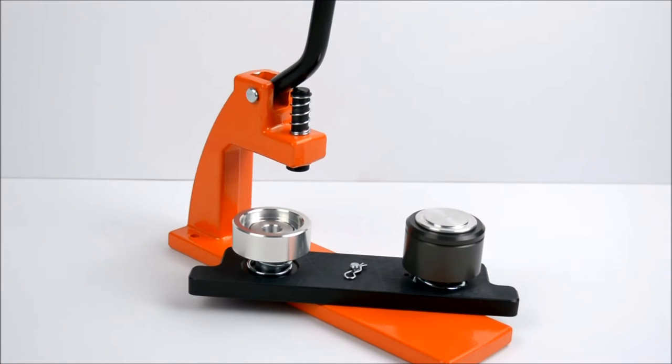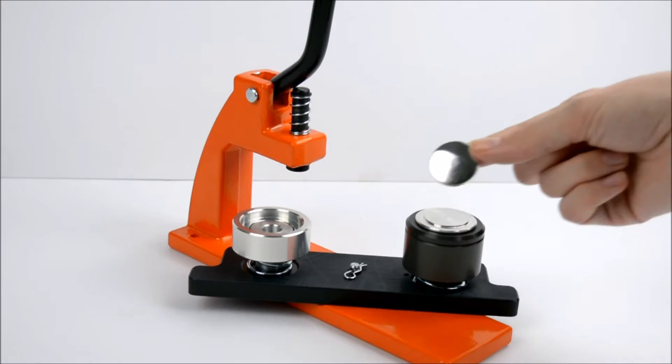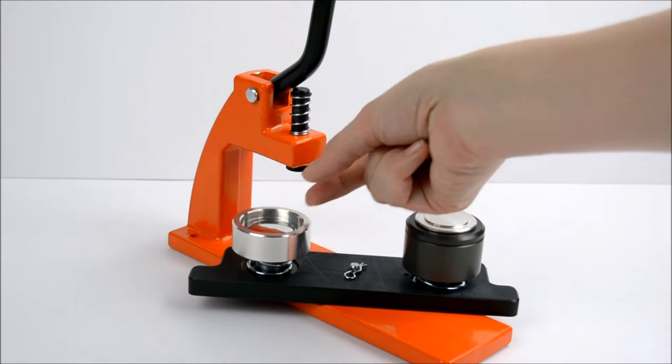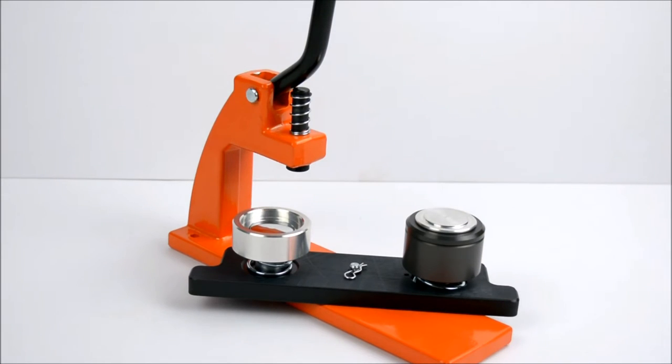To make a badge, start by placing the metal front into the first die. The metal edge should slot easily into the groove in the die.